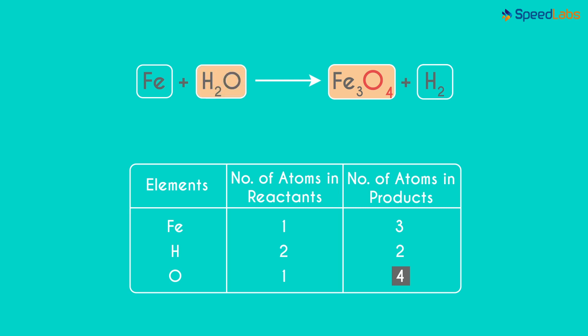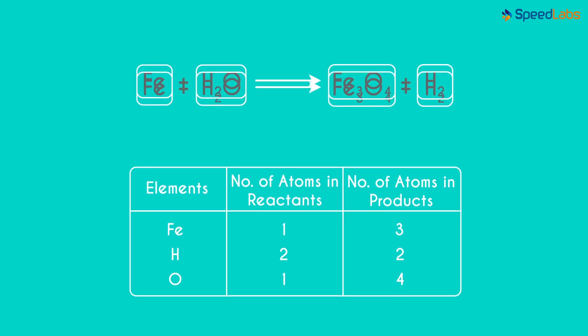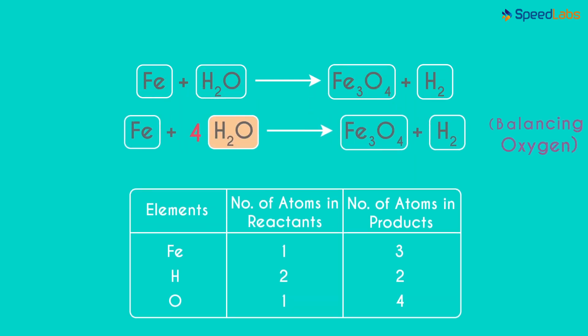On the right it's 4 and on the left it's 1. So to balance the number of Oxygen atoms, we multiply this compound with 4. So the number of Oxygen atoms on each side is 4 now.